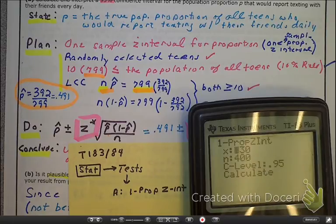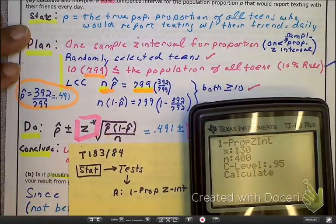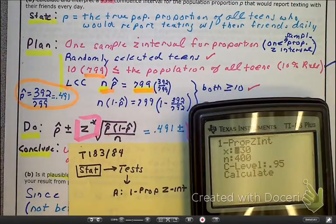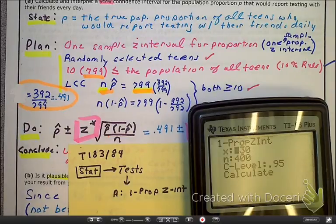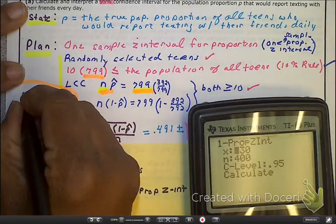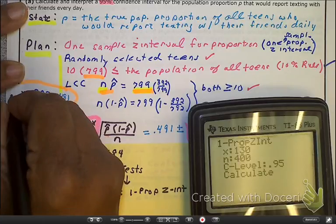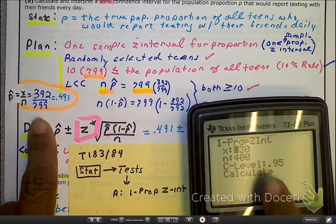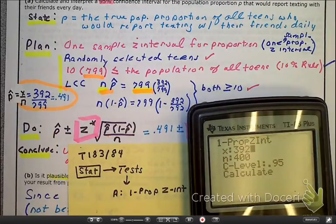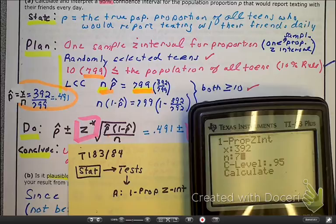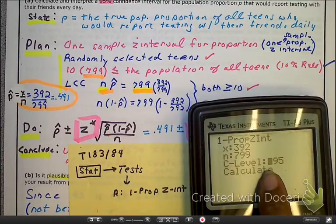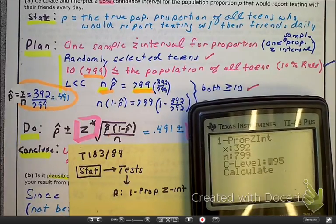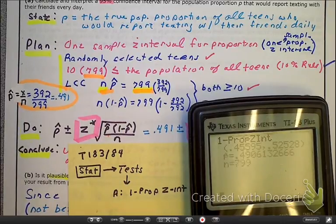I'm just going to type over these values. Let's remind ourselves that p-hat is x over n. X over n represents the p-hat — the probability of the sample. We're going to put these values in exactly as we see. So we're going to be typing in 392, enter, then 799, enter. We're going to type in our confidence interval, which happens to be 95%, and then we're just going to press enter.